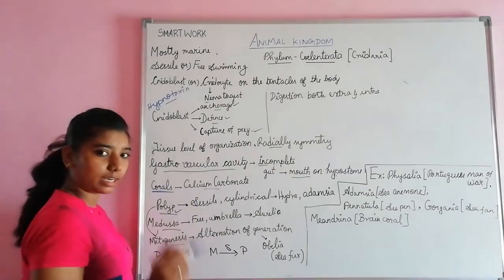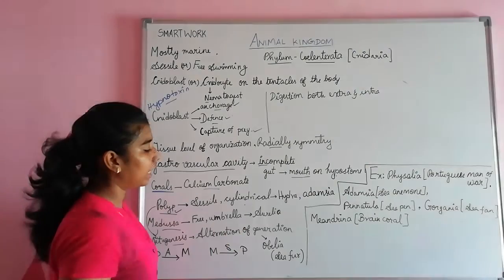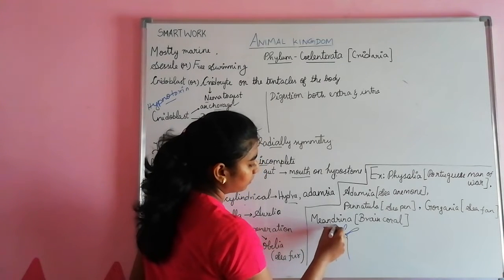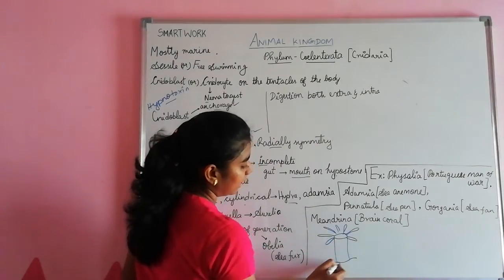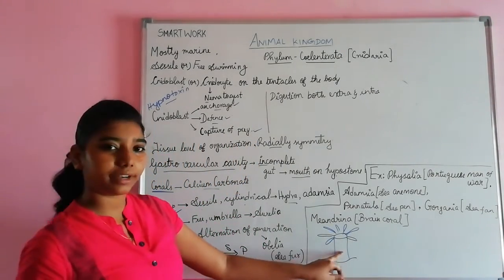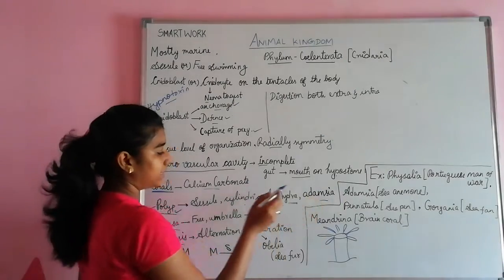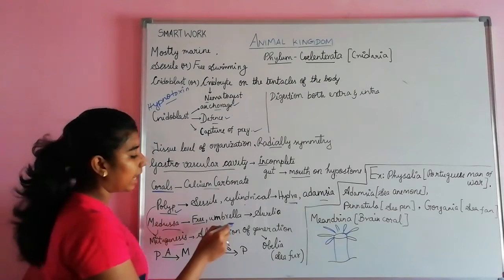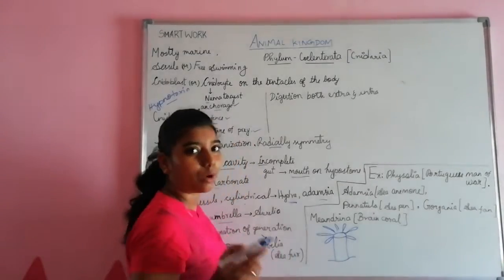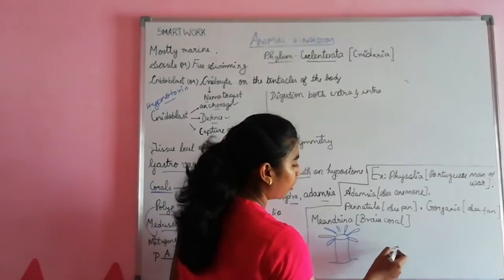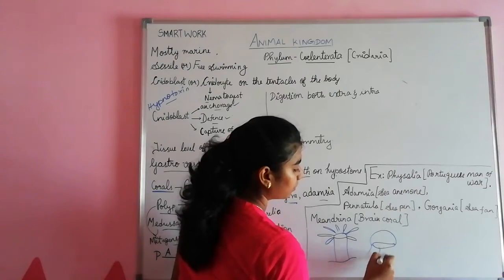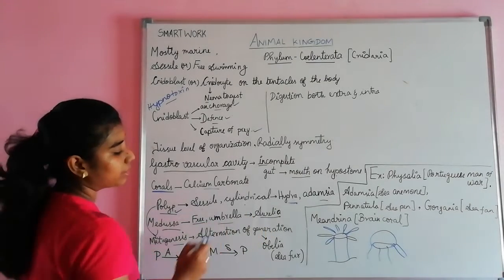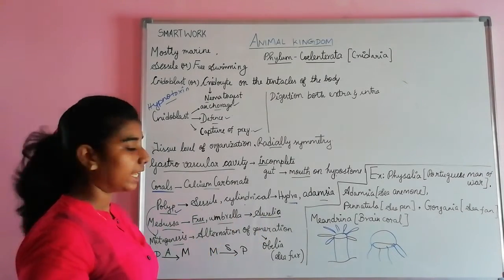Polyp is sessile and cylindrical — like hydra attached to a substrate with tentacles. Examples of polyp are hydra and Adamsia. Medusa is free swimming and umbrella-like — similar to jellyfish. Example is Aurelia, also called jellyfish.